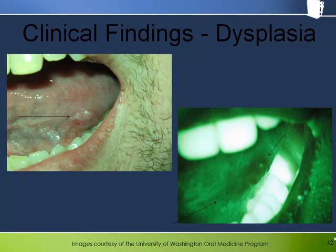This case is somewhat similar to the previous example, although in this case the oral medicine clinicians thought dysplasia without the help of the Velscope. What is interesting is that the Velscope added value by showing clinicians that the area of concern was larger than what was apparent under white light. Note the extension of the loss of fluorescence anterior to the main lesion.